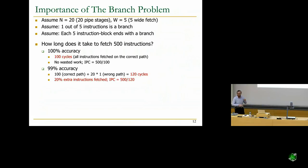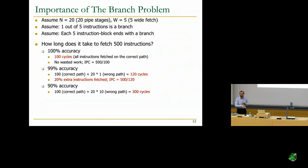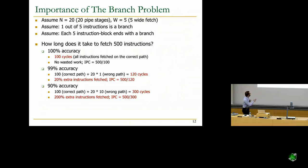At 90% accuracy — mispredicting 10% of branches, so 10 branches out of 100. We pay the 20-cycle penalty for 10 branches, we're on the wrong path for 200 cycles, correct path takes 100 cycles. Total 300 cycles to fetch 500 instructions, fetching 200% extra instructions. IPC degrades to 500 divided by 300, which is 1.66, as opposed to 5 — even with 90% accuracy.